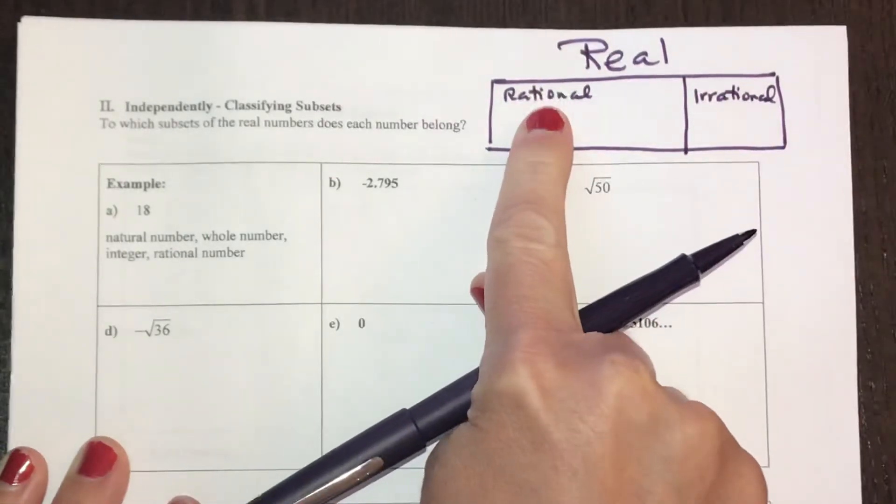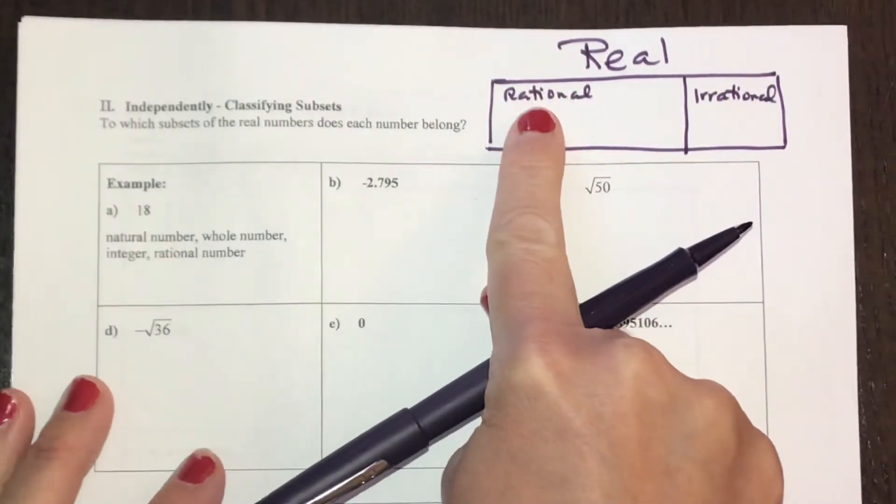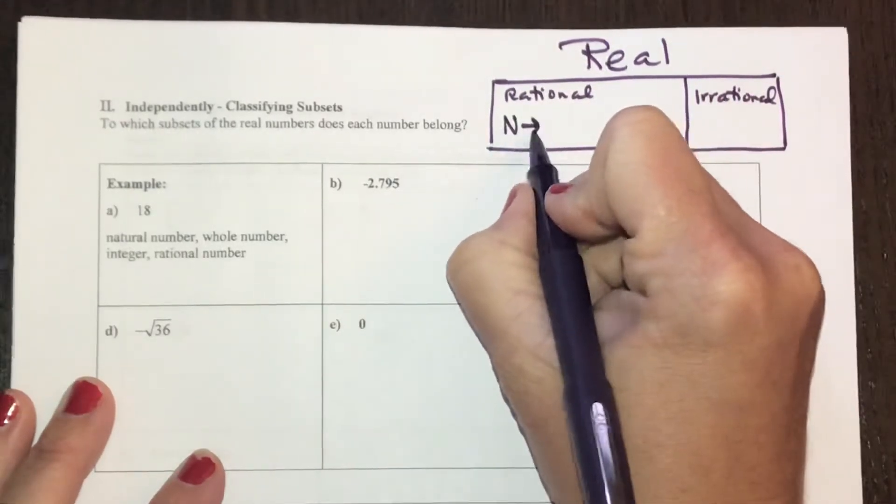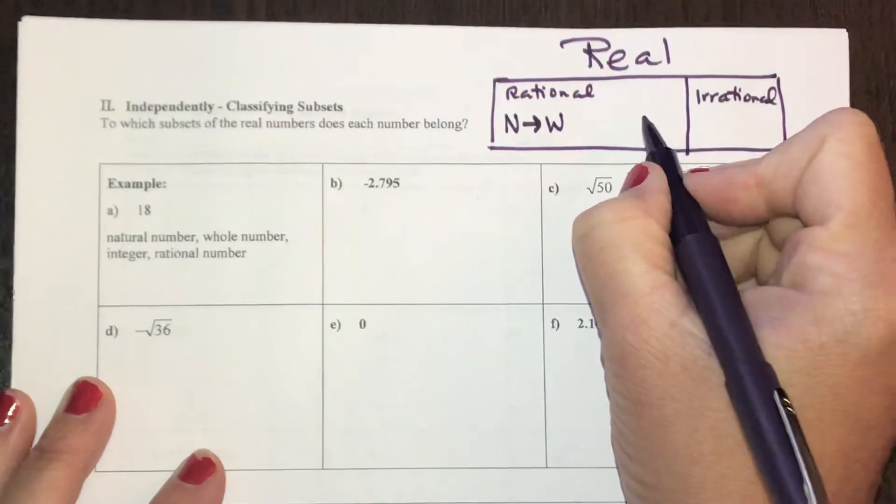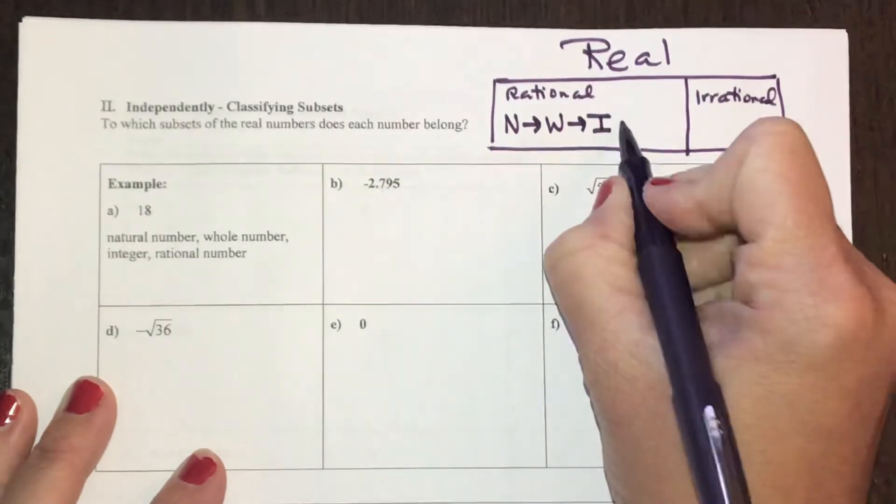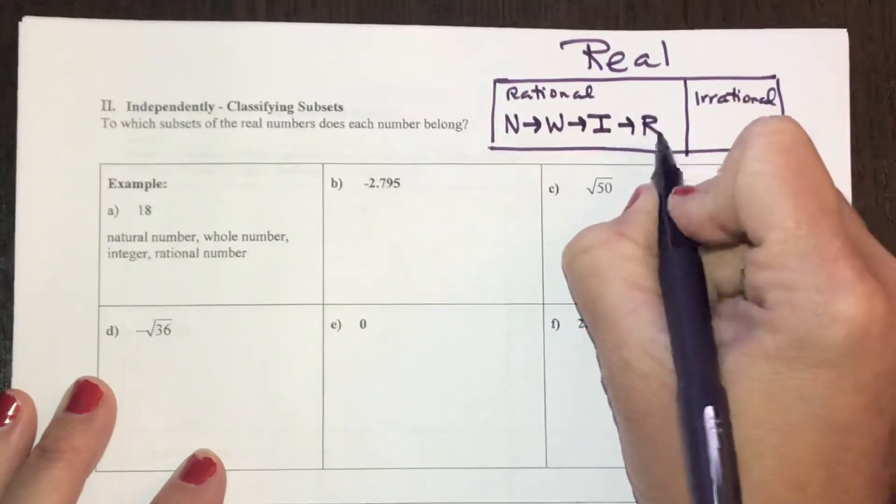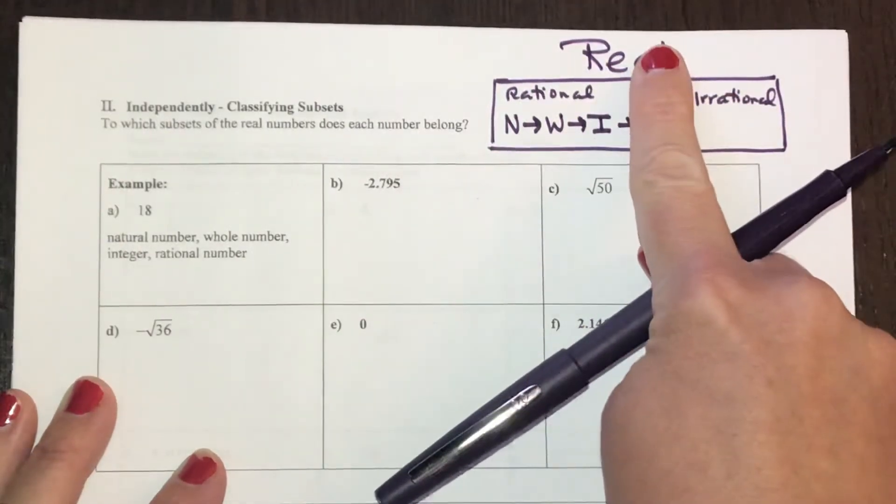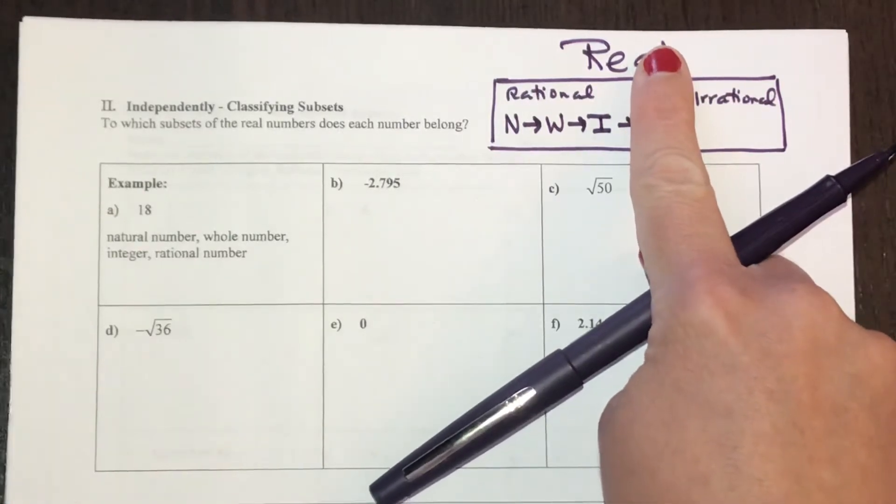Within rational, they start with the smallest subgroup, which is natural, then whole, which starts at zero, then integers, which includes negatives, and then irrational. And then all of those numbers are real. So don't forget to classify anything as a real number as well.